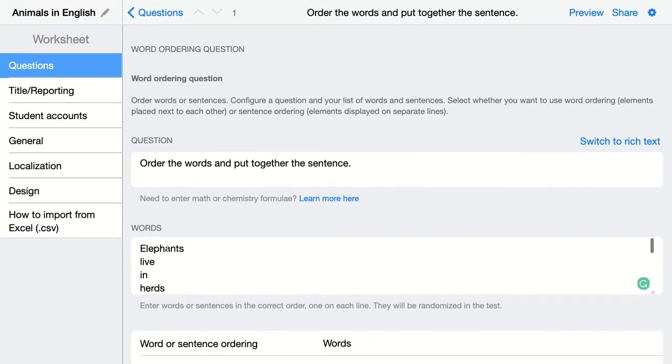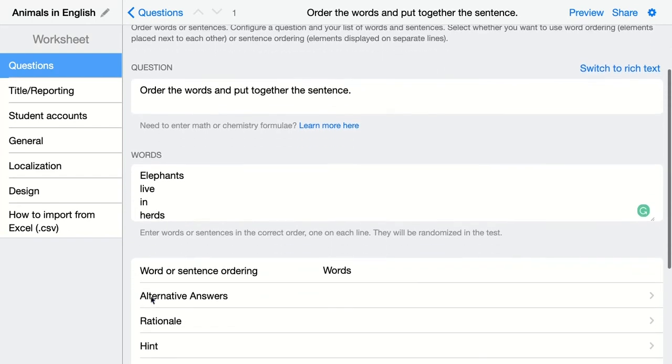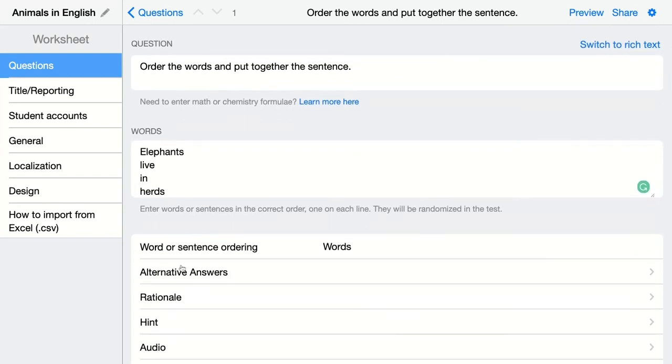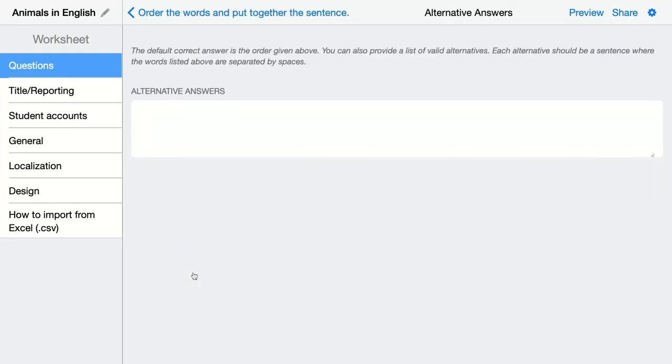So you have to configure it in the right way so BookWidgets knows that when students order the words in the sentence, this is the correct answer. When you scroll down, you can also add alternative answers. So in this case, maybe a sentence can also be ordered in a different way, so they can build a sentence using different places of the words. You can add the alternatives right here if you want. In this case, this is the only correct answer.